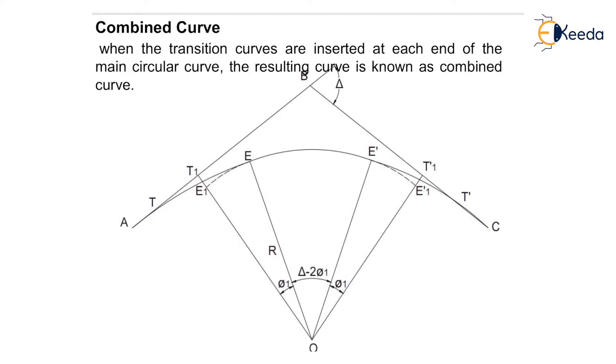The length of the combined curve can be found by using the length of circular arc plus 2 into L, where L is the length of the transition curve.